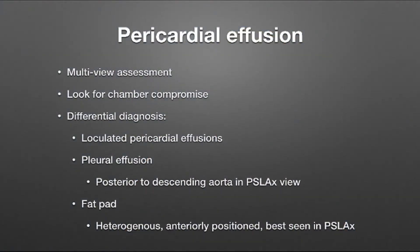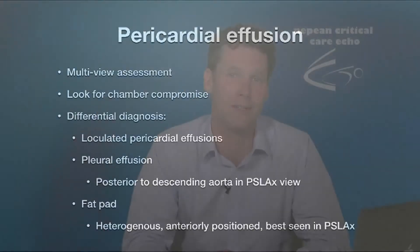We also need to consider pleural effusions. When you see fluid around the heart, the first consideration is whether it is in the pericardium or in the pleural space. One of the best ways to differentiate this is using the descending aorta in the parasternal long axis view. If you have fluid in front of the descending aorta, that is a pericardial effusion. If you have fluid behind the aorta, that is a sign of a pleural effusion.